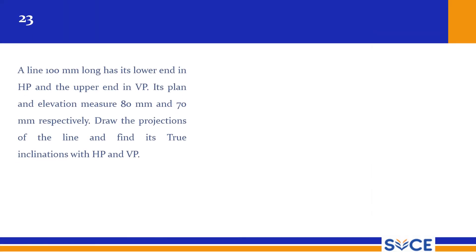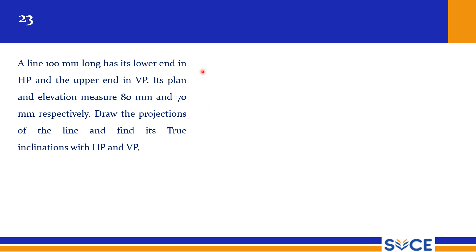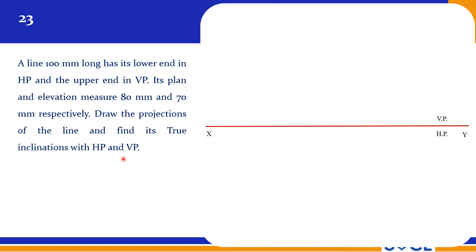Another problem of the same kind: a line 100 mm long has its lower end in HP and the upper end in VP. Its plan and elevation measure 80 mm and 70 mm respectively. So the plan and elevation are given instead of theta and phi. Draw the projections and find the true inclinations with HP and VP — this is the XY reference line.